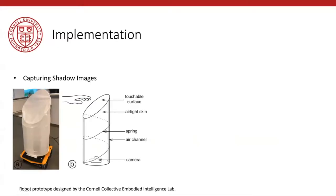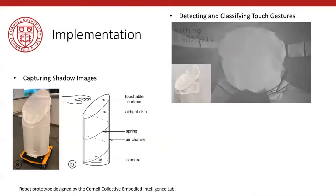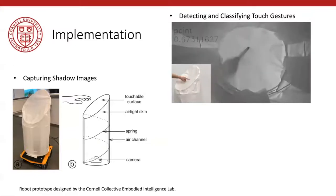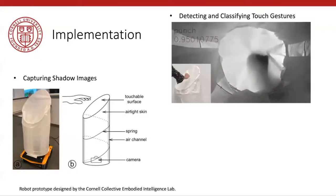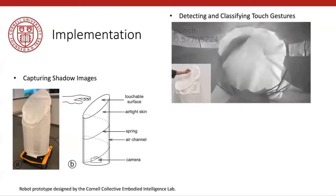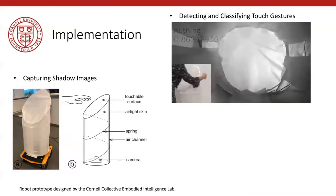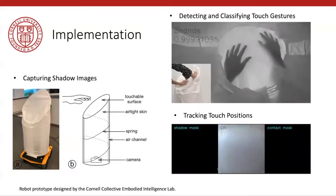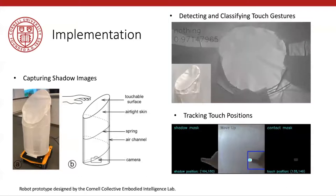We implement ShadowSense with an inflatable robotic prototype. It has a translucent skin cover of the body and a fisheye camera inside capturing the shadows on both the top and sides of the skin. The robot prototype is designed and manufactured by the Cornell Collective Embodied Intelligence Lab. To detect and classify shadow images, we implement densely connected convolutional neural networks that take shadow images as input and output predicted touch gestures, as shown in the top left corner of the video. To track touch positions, we present a color segmentation-based algorithm to check both touch positions and overall shadow positions.